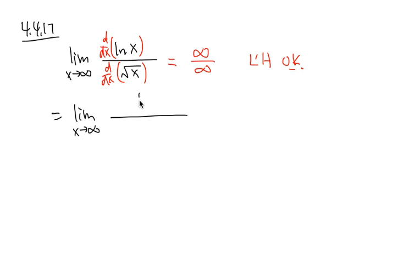Derivative of Ln x is 1 over x. Derivative of square root of x is 1 over 2 square root of x. And now, we end up with a complex fraction right here.